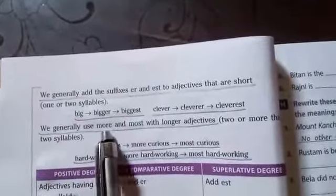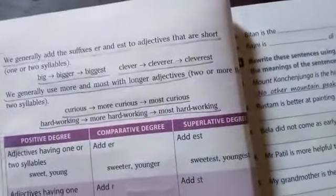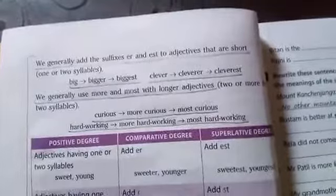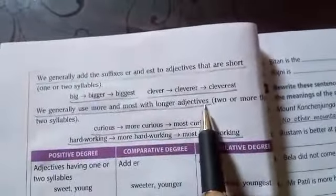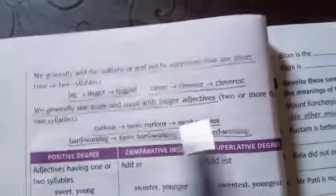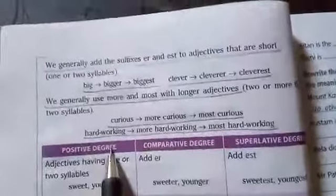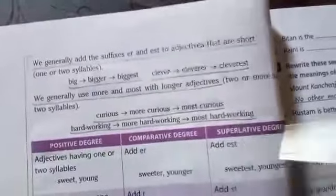We generally use 'more' and 'most' with longer adjectives. If there are short adjectives, small words, generally we use ER and EST to make comparative and superlative degree. And if there is a long adjective, then we will use 'more' and 'most'. For example: curious — curious means jigyasu — more curious, most curious. Hardworking is a long adjective, so we use: more hardworking, most hardworking.